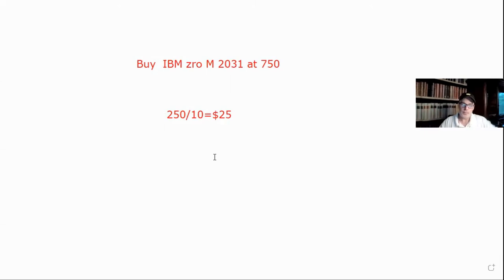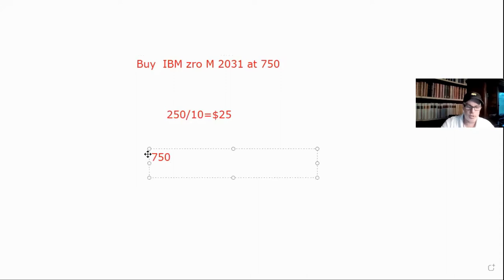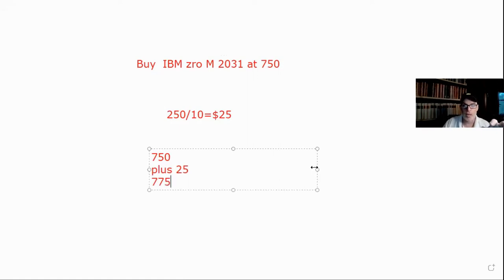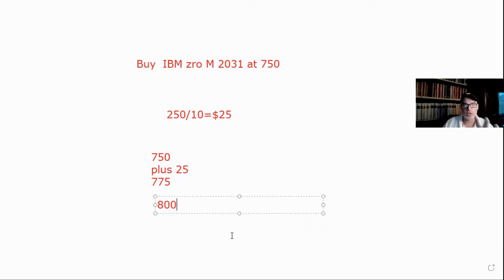That means we accrete $25 every year. If we hold it all the way to maturity, we've accreted all the way up to par, so there's no capital gain or loss. After year one, your cost basis goes from 750 to 775. After year two it's 800, and so on. We're increasing the cost basis — not the proceeds — each year.